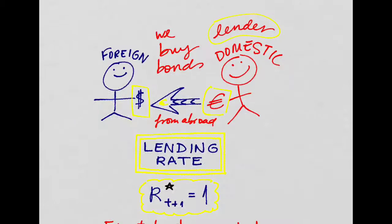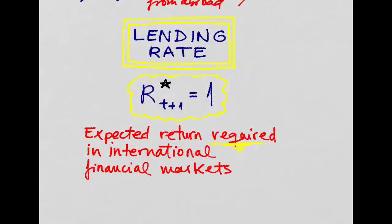If the savings of the country are really high, we'll end up lending to the rest of the world. That means that we will be buying the bonds that the foreigners issue, and we will receive a fixed rate that is just equal to one, the lending rate, that international financial markets require.